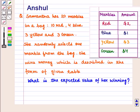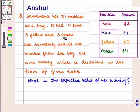Hello and welcome to the session. In this session, we are going to discuss the following question: Samantha has 20 marbles in a bag — 10 red, 4 blue, 3 yellow, and 3 green. She randomly selects one marble from the bag. She wins money as described in the given table. What is the expected value of her winning?